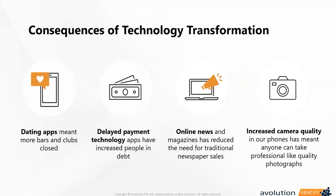Technology has enabled online content payments and retail subscription models — great for people without immediate finances, but the consequence is people becoming indebted. Online news has changed how we consume information. Camera quality, GPS trackers, travel agents, taxi booking — all of these things are done through our phones now. Technology transformation can have real consequences on other industries, and that's something to keep in mind.